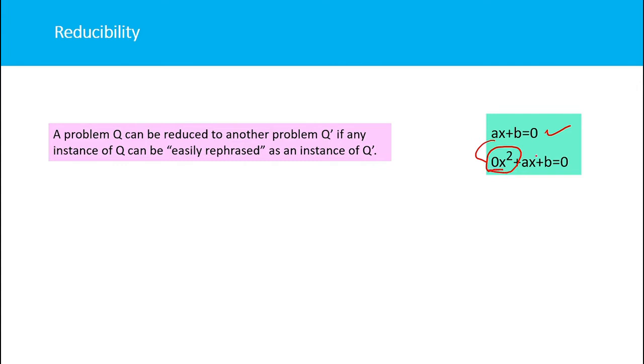This process of conversion is called reducibility or reduction. Note that by reduction, we are not reducing any complexity or reducing the number of variables; we are just converting the problem to another class of problem, just rephrasing the problem.